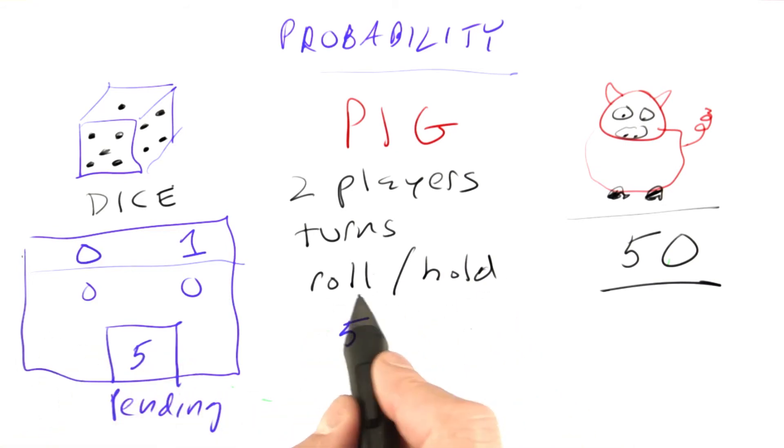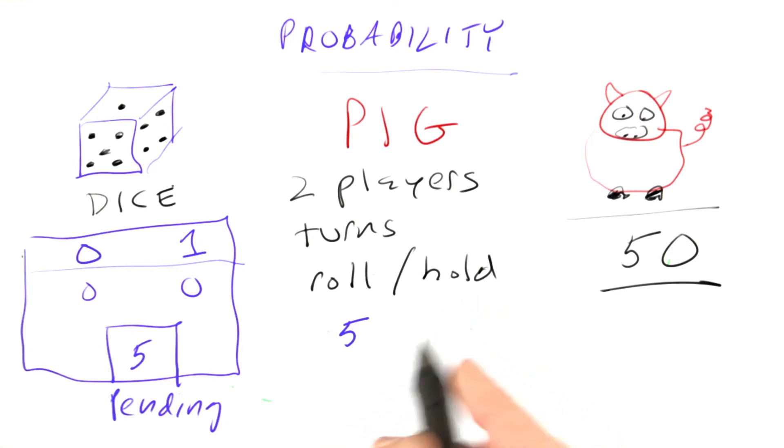Now is my turn again. Do I roll or do I hold, stop rolling? Let's say I want to roll again. This time I get a 2, so I add 2 to the pending score. I get 7. Let's say I roll again. I'm lucky I get a 6. I add 6 to the pending. I get 13.